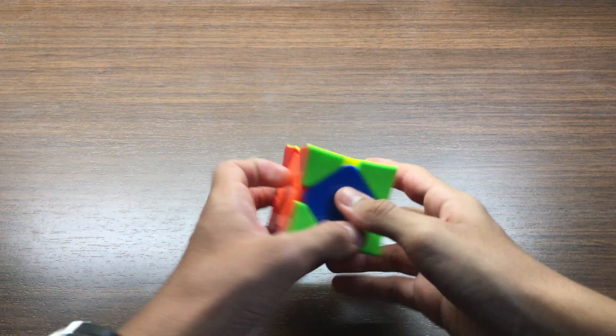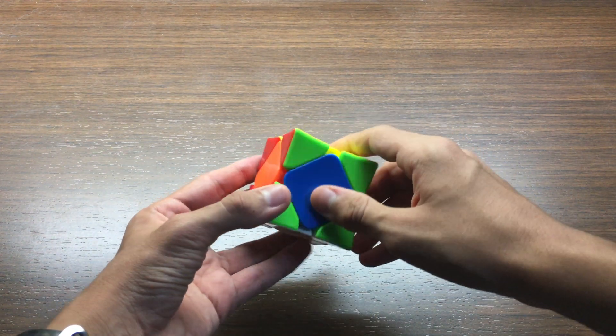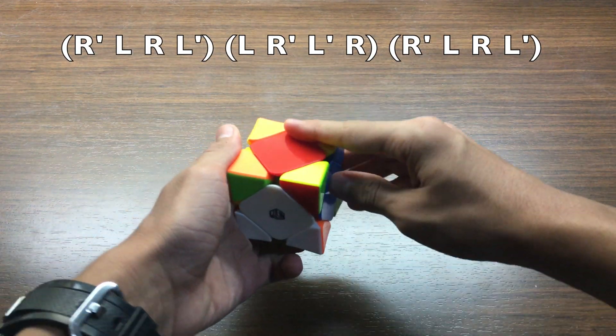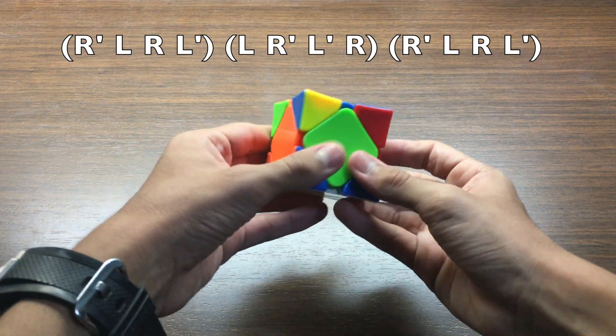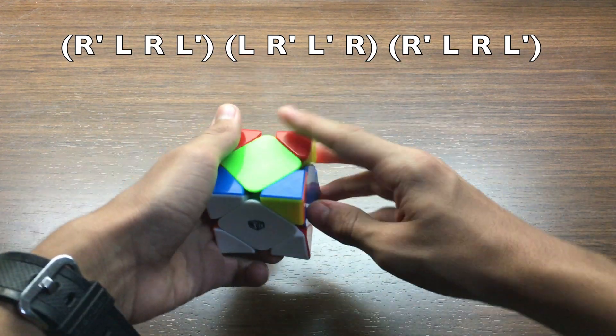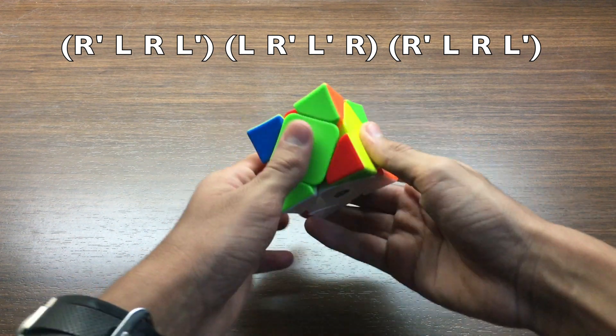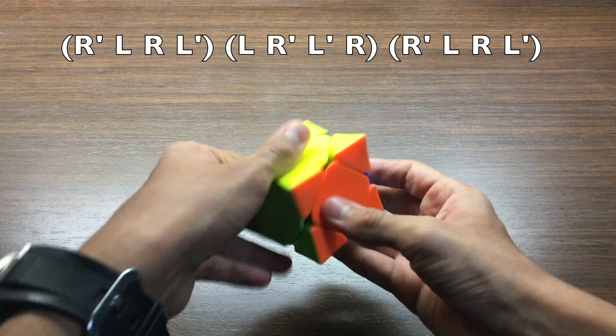Another way to execute this algorithm is like this: you start by doing a sledgehammer, which is R prime L R L prime. Then you rotate and you do a head slammer, which is L R prime L prime R. Then you rotate again and you do another sledgehammer: R prime L R L prime.